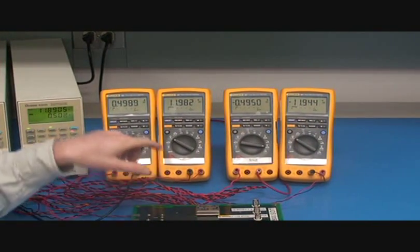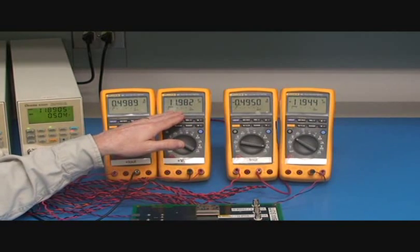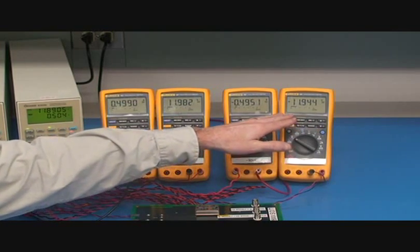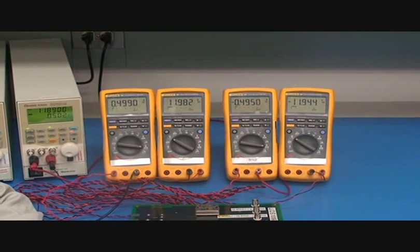On the meters, we can see the positive 12 volt output is 11.98 volts, and the negative 12 is negative 11.94 volts. This is for a balanced load condition.